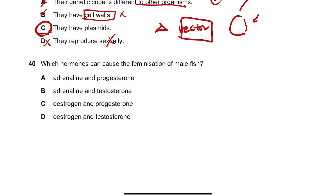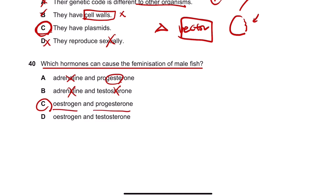This is the last question, number 40. Which hormones can cause the feminisation of male fish? We need to find female hormones. Adrenaline is found in both sexes. Progesterone is a female hormone. Testosterone is a male hormone. Estrogen and progesterone are both female hormones. So the answer for the last question is C. Thanks guys — if you have any questions, just leave a comment. See you next time.